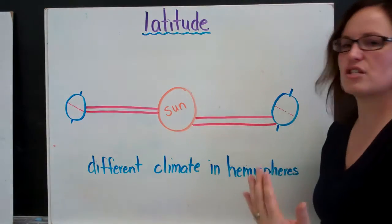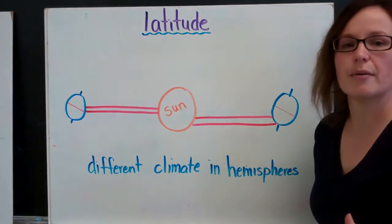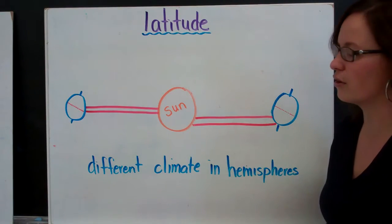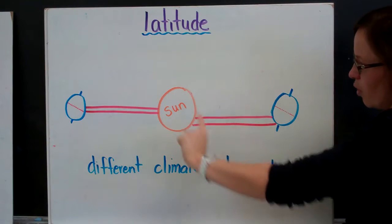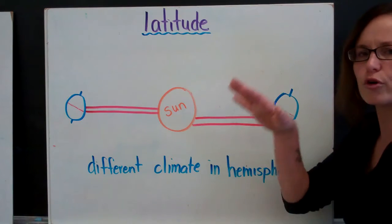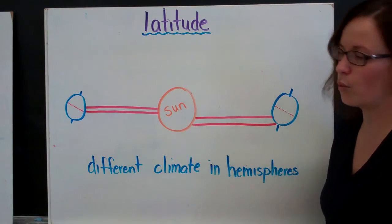When the northern hemisphere is closer to the Sun as it's spinning, we have summer because we're getting more direct sunlight. It's not as spread out over such a large area. When we are tilted away, when it's on the other side and we're tilted away from the Sun, the Sun's rays is being spread over a larger area, which results in us having cooler temperatures and winter.